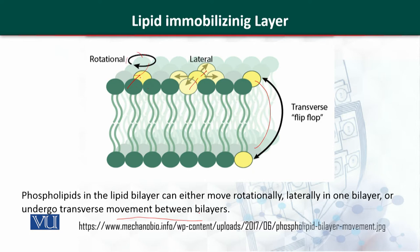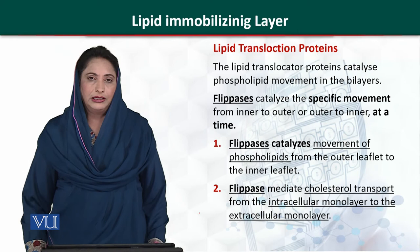All three types of movements are shown in this slide. The first type is rotational movement, where the molecule can rotate and interact with neighboring molecules. The second type is lateral movement, clearly shown here. The third type — flip-flop — is very important, where the molecule can change its face from top to bottom and bottom to top. Phospholipids in the lipid bilayer can move rotationally, laterally within one bilayer, or undergo transverse movement between different bilayers.